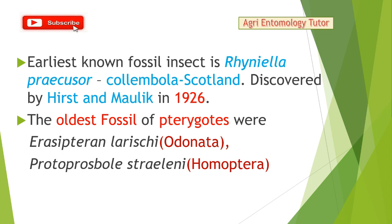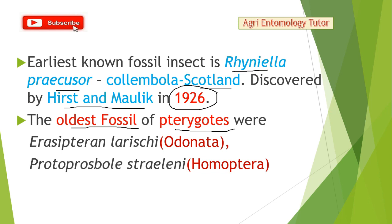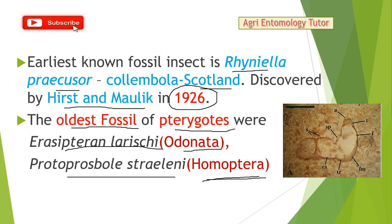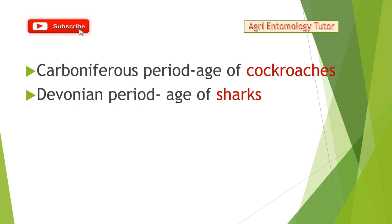The earliest known fossil insect is Rhiniella praecursor, a collembolan discovered in Scotland by the scientist Hirst and Maulik in 1926 — an important question for JRF exams. Another important question: the oldest fossils of pterygotes belong to two orders — one is Odonatoptera (Erasipteran larischi) and the other is Homoptera (Protoprosbolus stralani). The Carboniferous period is called the age of cockroaches.